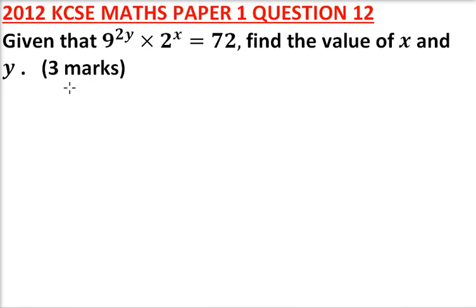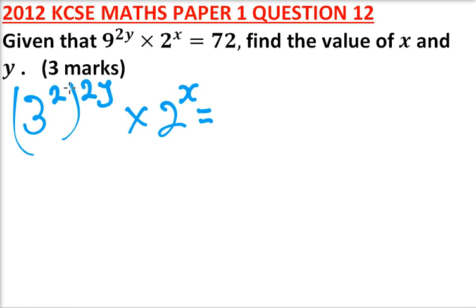So we'll start by writing 9 in terms of powers of 3, so 3 squared. This is 2y multiplied by 2 to the power x is equal to 72 can be written as 8 times 9, so this is 2 to the power 3, that is the same as 8 multiplied by 3 to the power 2. That is 8 times 9 is 72.